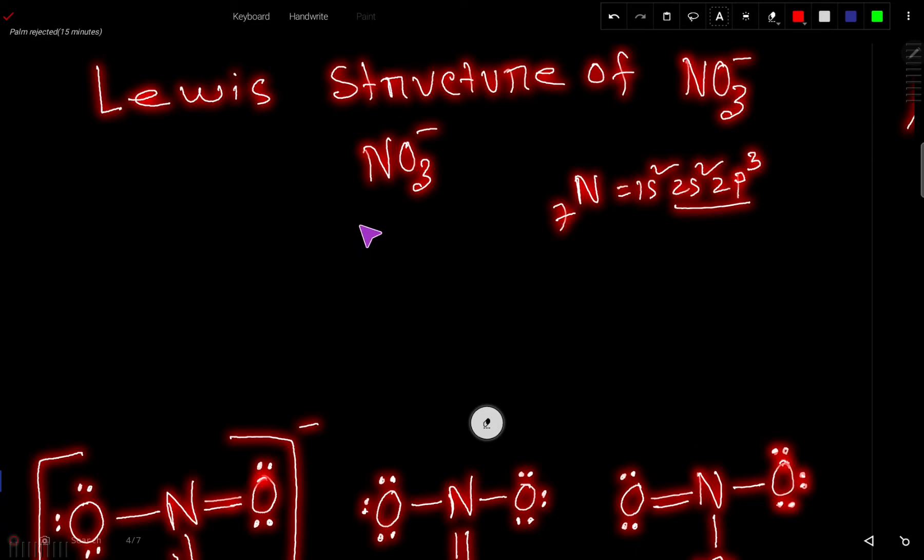Nitrogen has five valence electrons because it is the element of group 5A, and oxygen has six valence electrons because it is the element of group 6A. Then we need to multiply by three, and for negative charge we add one. So we have 24 valence electrons totally.